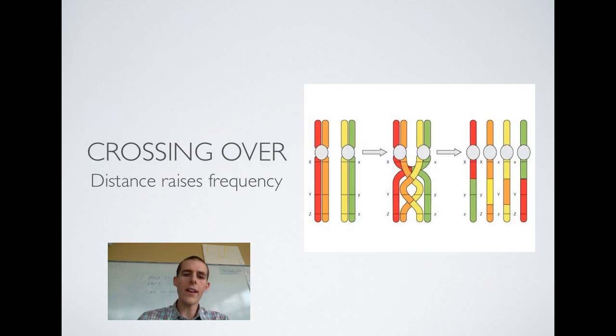So when it comes to crossing over, the distance between the genes is going to give a clue as to how close together or how far apart those genes are on any particular chromosome. Remember, linked genes are genes that are on the same chromosome. If you've got, let's say, two genes that are right next to each other on the chromosome, so if we're talking about our fruit fly, let's say that this gene is for the shape of the wings and this gene is for the color of the body, it's going to be likely that these two genes are going to stick together through this crossing over process.